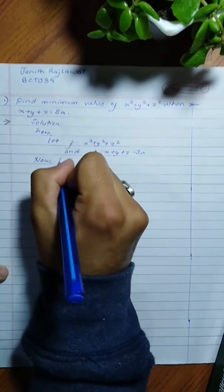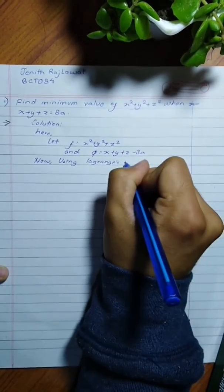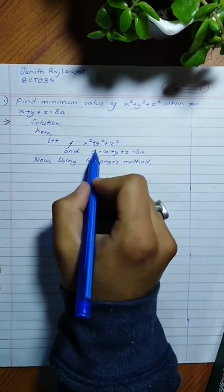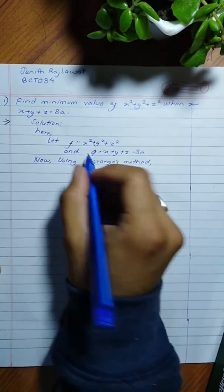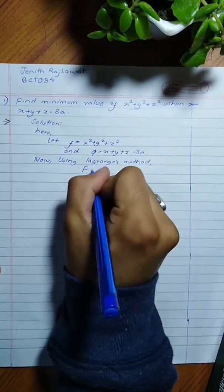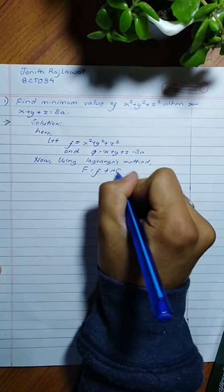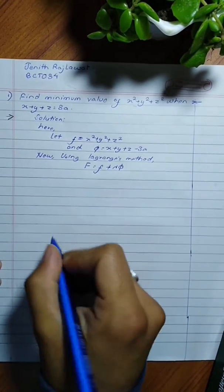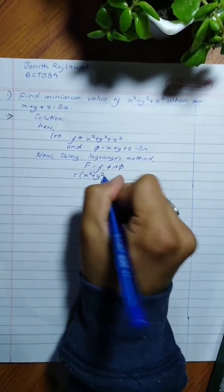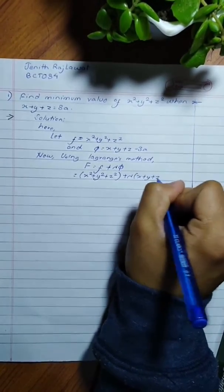Using Lagrange's method, we must convert the two equations into one function. Let's call it big F, which equals small f plus lambda (a constant) times phi. Replacing f and phi, we get F equals x squared plus y squared plus z squared plus lambda times (x plus y plus z minus 3a).